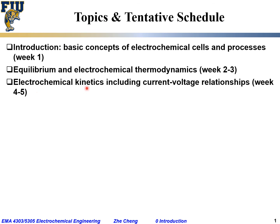In weeks four and five, we'll cover electrochemical kinetics — how fast things go and the mechanism or path for different reactions. We'll focus on the current-voltage relationship from an electrochemical point of view. Current density tells us how many electrons or charges pass per unit time, which is fundamentally linked to kinetics, or how fast the electrochemical reaction happens.